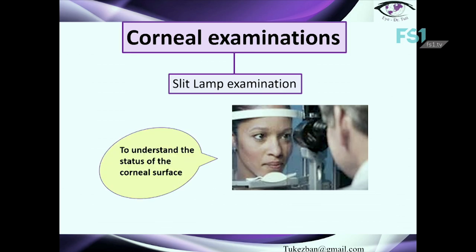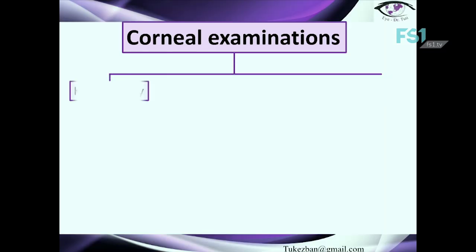The second part is about examinations. Before starting corneal refractive examinations, the first thing we must do is the slit lamp examination. The slit lamp examination helps us understand the status of the corneal surface — whether there is any scar, dry eye syndrome, or tear film instability — because all these factors may affect the clarity of the corneal image when we analyze it for refractive surgery.